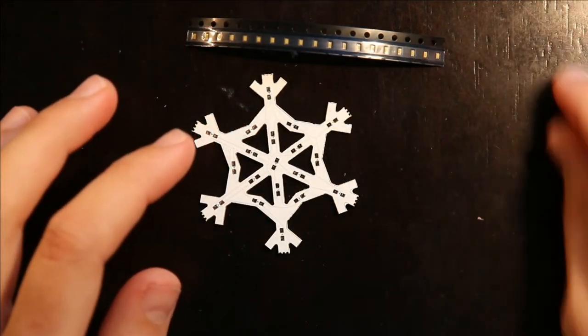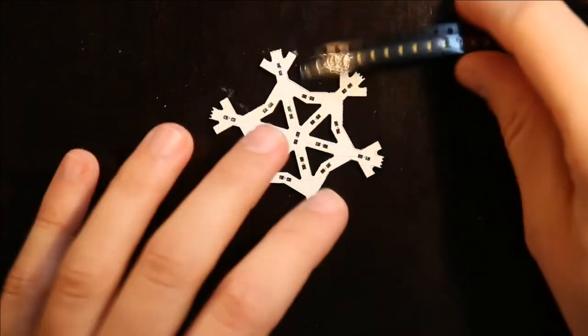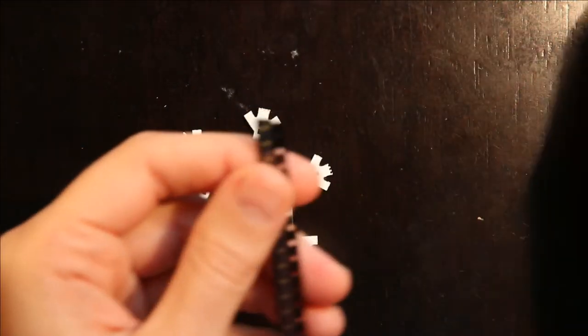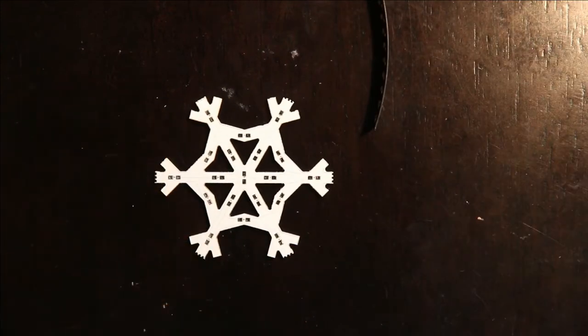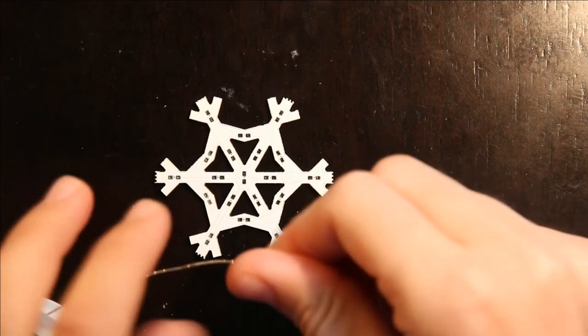So the first thing we solder is the LEDs. We actually start by taking a small amount of solder and putting it on one of the pads.